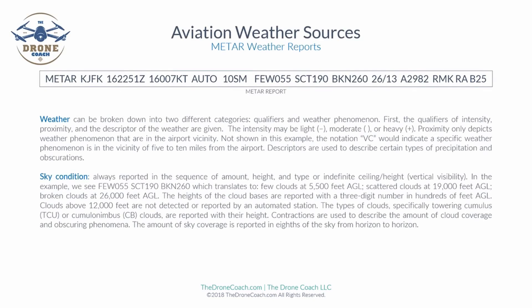Next we have weather, which can be broken down into two categories: qualifiers and weather phenomena. The qualifiers of intensity, proximity, and descriptor are given first. Intensity may be light (indicated by a minus sign), moderate (indicated by nothing), or heavy (indicated by a plus sign). Proximity depicts weather phenomena in the airport vicinity — the notation VC indicates a specific weather phenomenon is within 5 to 10 miles from the airport.